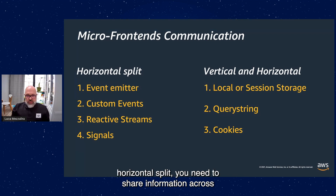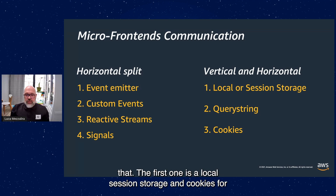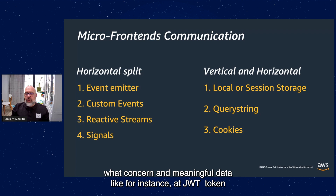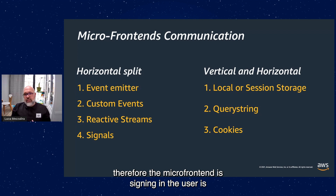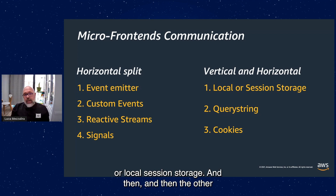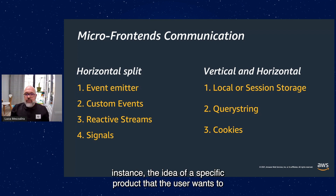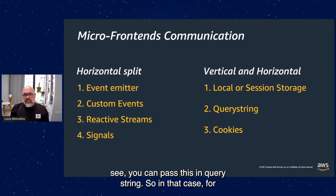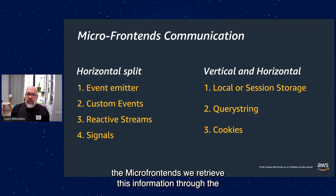Whether you pick vertical or horizontal split, you need to share information across different views. There are two main ways: first, local session storage and cookies for meaningful data — for instance, a JWT token you want to share across multiple micro-frontends. The micro-frontend handling sign-in stores the JWT token in cookies or local session storage, and other micro-frontends retrieve it directly. For more volatile data, like the ID of a specific product a user wants to see, you can pass it in the query string, and all micro-frontends retrieve that information and fetch from the application server.